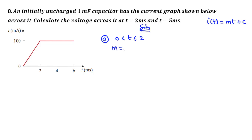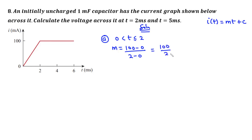The gradient is given by the change in y over the change in x. The initial point is (0, 0) and the final point is (2, 100). So the change in y is 100 minus 0, and the change in x is 2 minus 0. That gives us 100 divided by 2, which equals 50. So we have the value of m equal to 50.